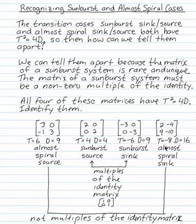In the last case, trace is negative 8, the eigenvalues are negative 4 and negative 4, and this must be an almost spiral sink.